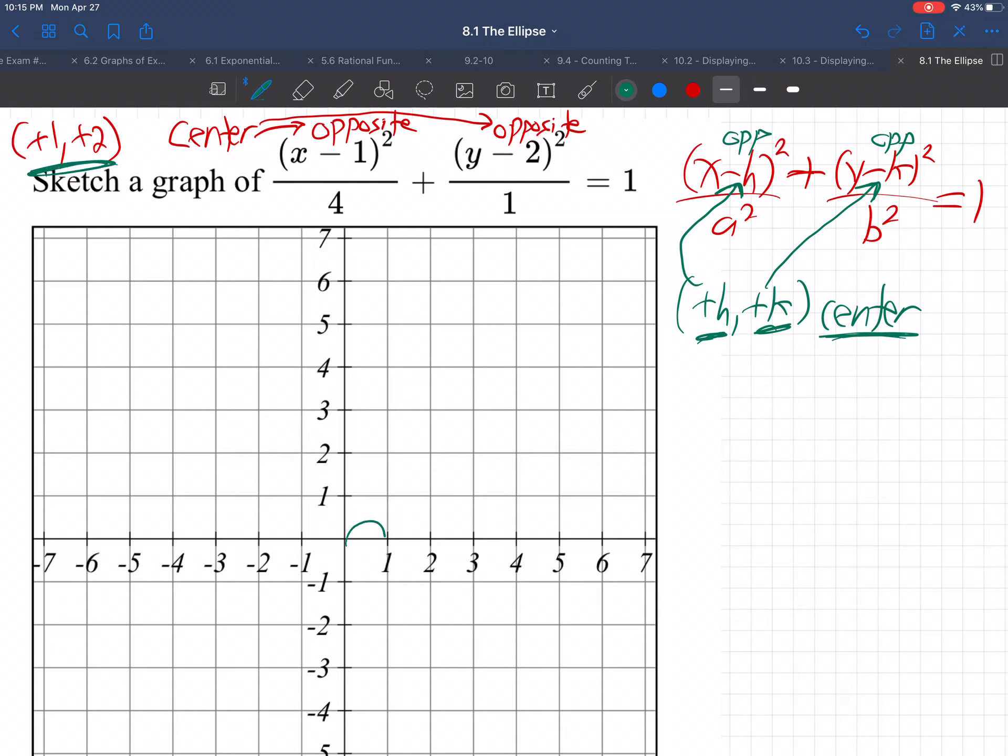So over 1, over 1, up 2, right there. Over 1, up 2 is the center. That's the middle of our egg shape, the middle of our ellipse. So you start with that.